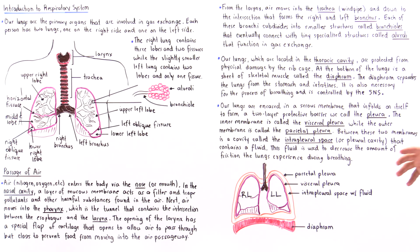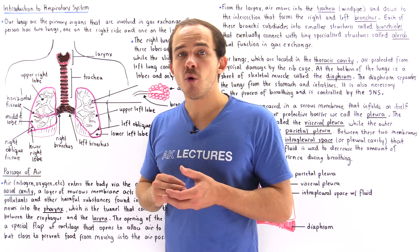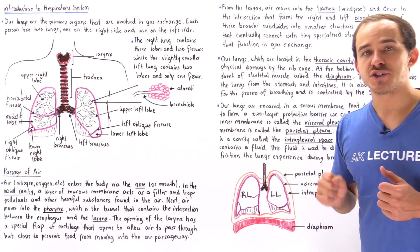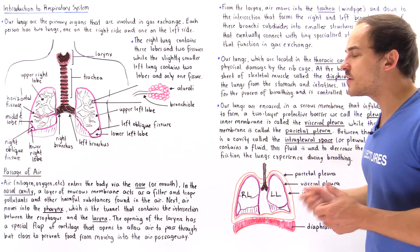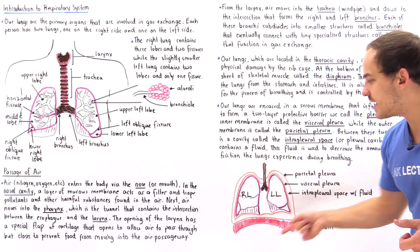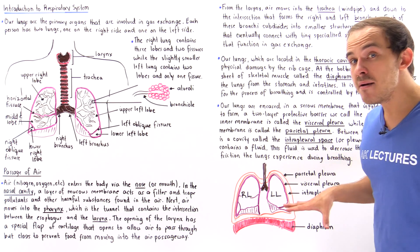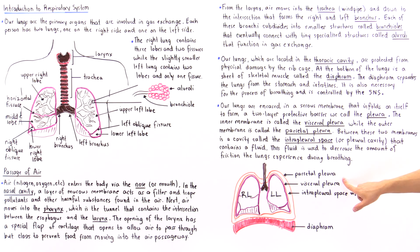Our lungs are encased in a membrane we call the serous membrane — it's called a serous membrane because it contains a fluid. This serous membrane consists of two individual membranes: an outer membrane and an inner membrane, forming a two-layer protective barrier that encloses our lungs. This entire membrane enclosing our lungs is known as our pleura. We have an outer membrane called the parietal pleura, and an inner membrane called the visceral pleura.